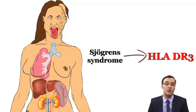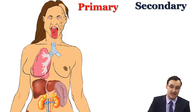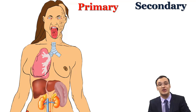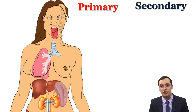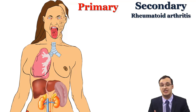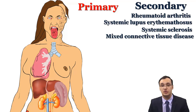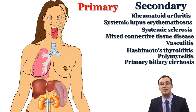Finally, we need to determine if this woman has primary or secondary Sjogren's syndrome. Primary means she only has Sjogren's syndrome with no other associated disease. Secondary means Sjogren's syndrome occurs secondarily to another disease. The most common associated disease is rheumatoid arthritis. Other associated diseases include systemic lupus erythematosus, systemic sclerosis, mixed connective tissue disease, vasculitis, Hashimoto's thyroiditis, polymyositis, primary biliary cirrhosis, and chronic autoimmune hepatitis.